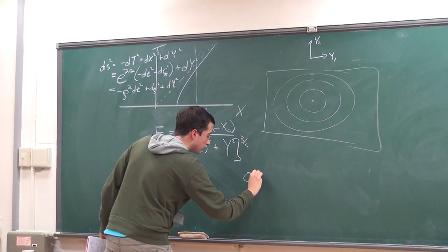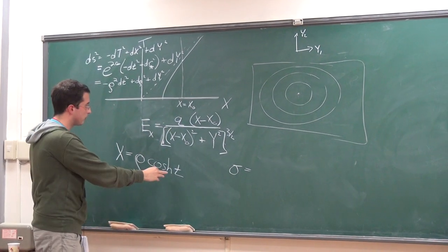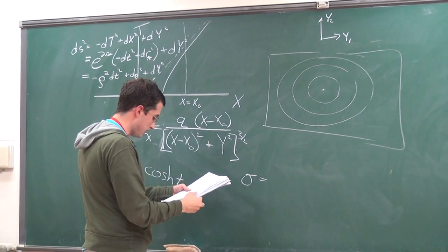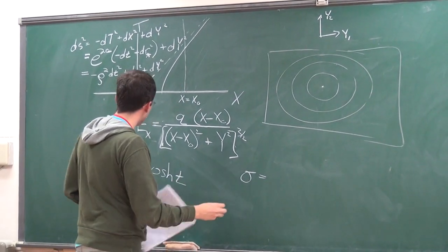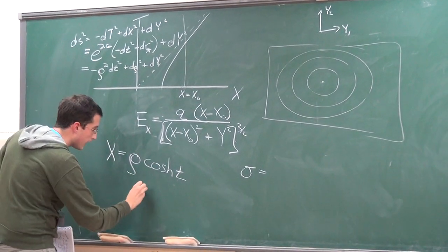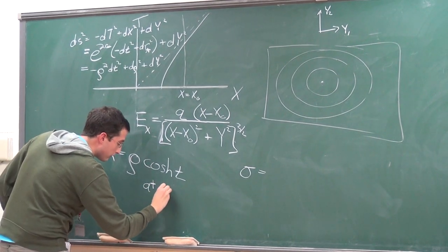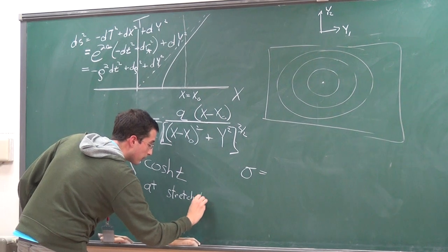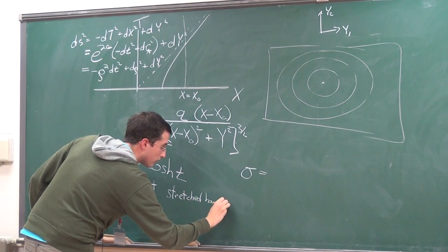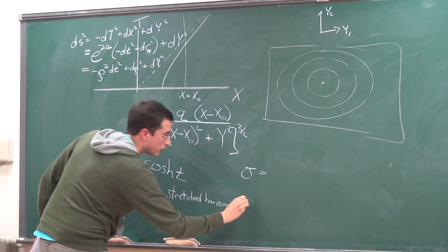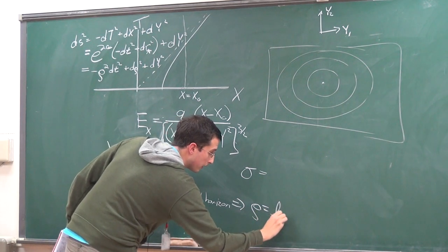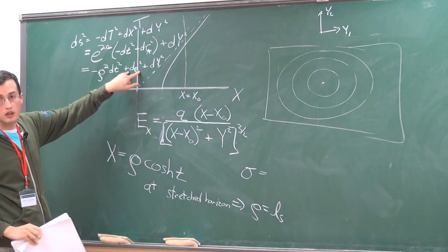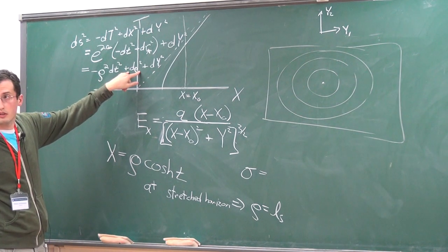The surface charge density as a function of time — if I take the large time limit of this at the stretched horizon, I want this at the stretched horizon. I set Rho equal to L-String. It's a distance L-String from the horizon.